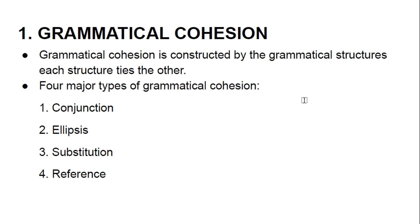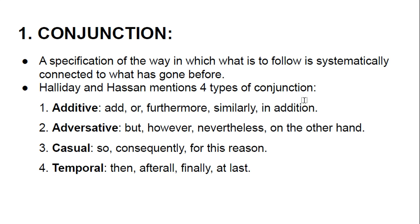Grammatical cohesion is constructed by grammatical structures where each structure ties to the other. There are four types of grammatical cohesion: conjunction, ellipsis, substitution, and reference. Conjunction is a specification of the way in which what is to follow is systematically connected to what has gone before. Halliday and Hasan mention four types: additive, adversative, causal, and temporal.